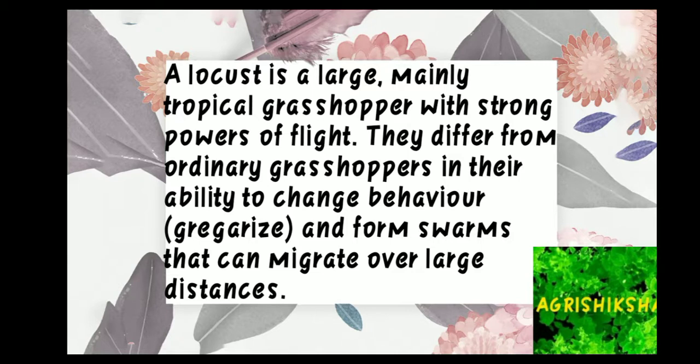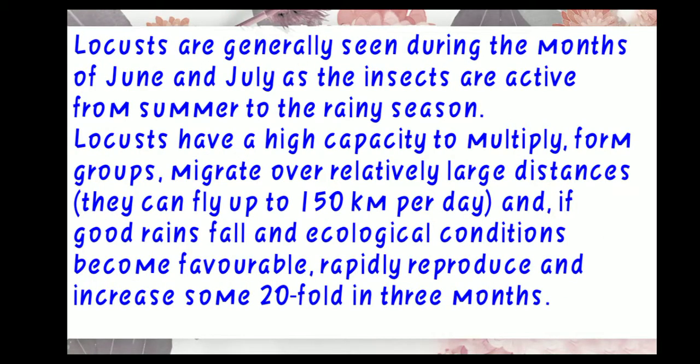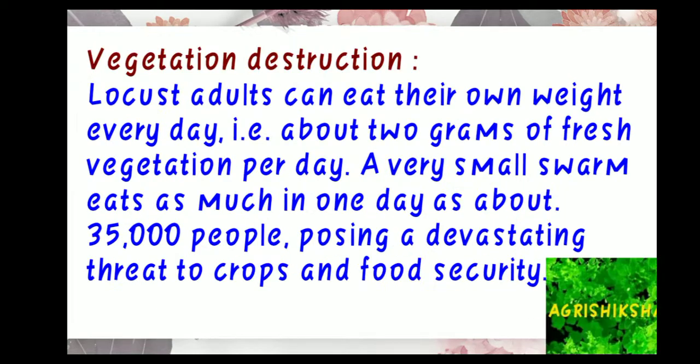Locusts form swarms that can migrate over large distances. They are mainly seen during the months of June and July, as the insects are active from summer to the rainy season. They have a high capacity to multiply and form groups, migrating over large distances. They can fly up to 150 km per day. With good rainfall and ecological conditions, they can reproduce rapidly and increase 20-fold in three months.